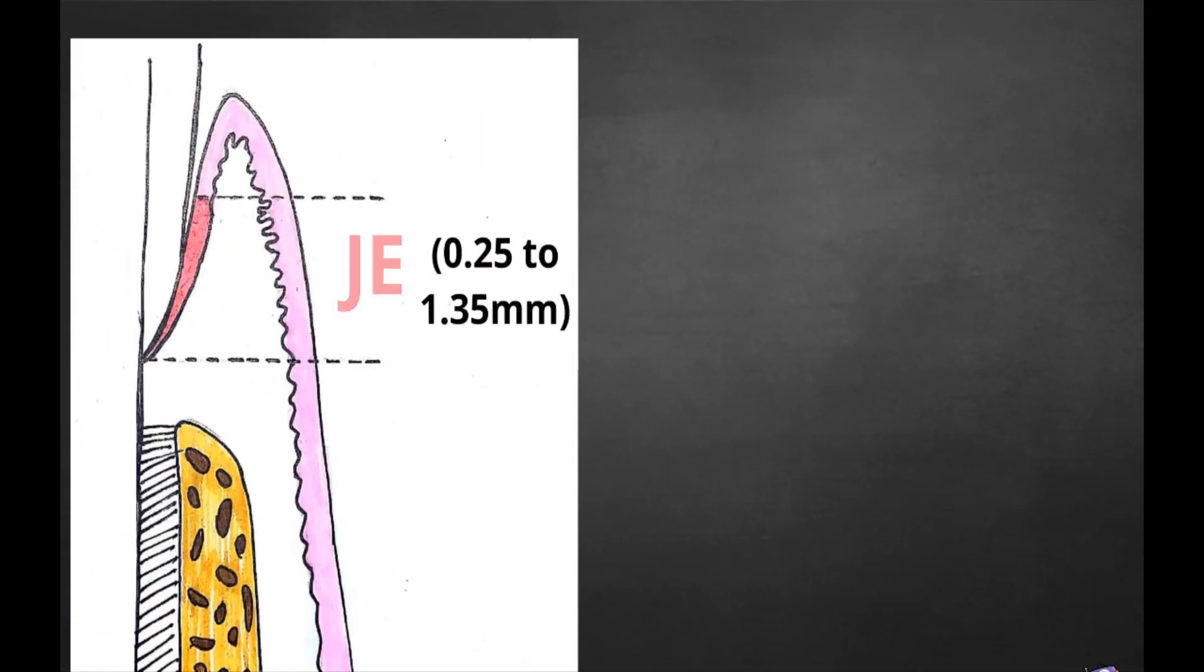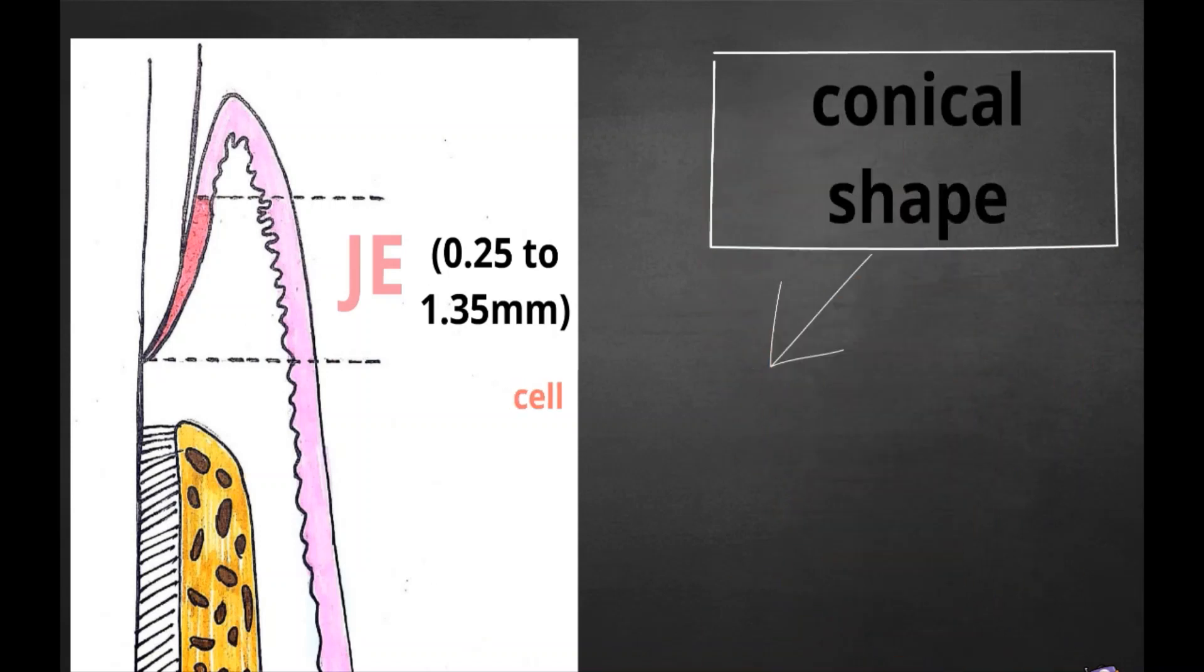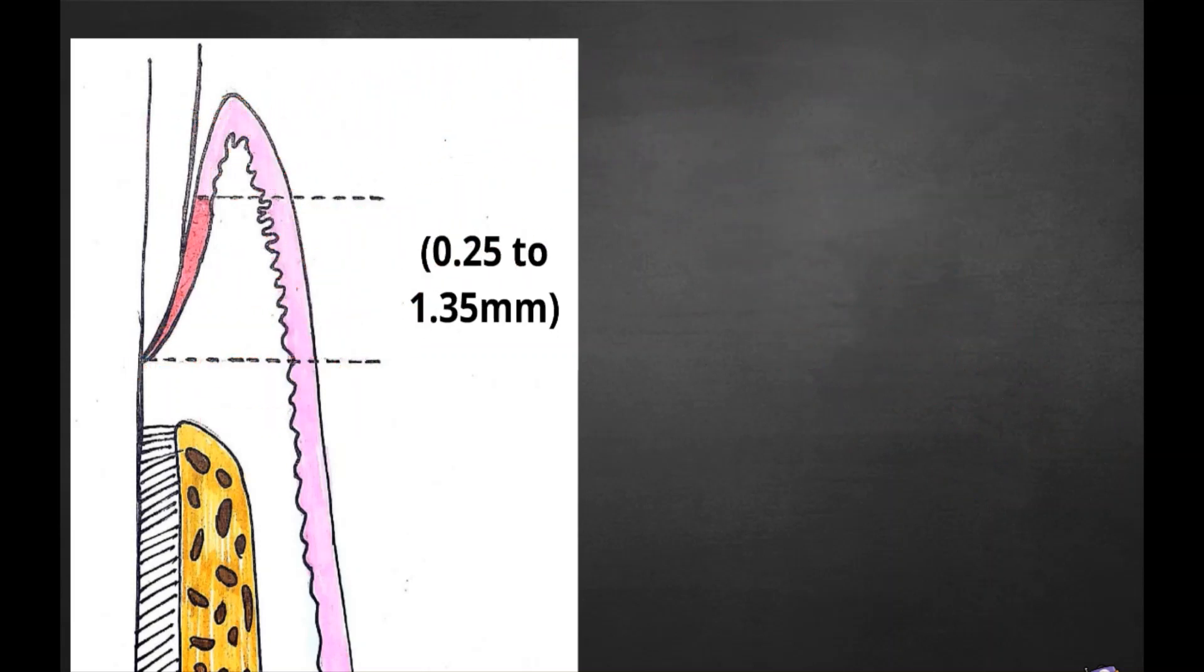Length of junctional epithelium ranges from 0.25 to 1.35 millimeters. The junctional epithelium has a conical shape as it tapers from its coronal end which may be 10 to 29 cells wide to 1 to 2 cells wide at its apical termination. That is coronally many cell layers and towards CEJ 1 to 2 cell layers.